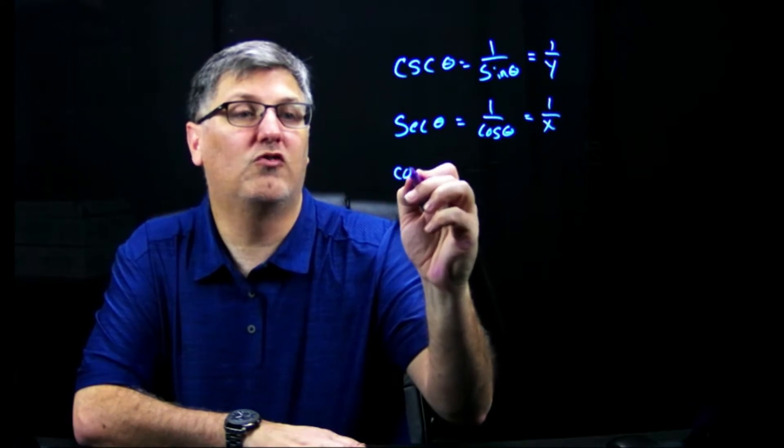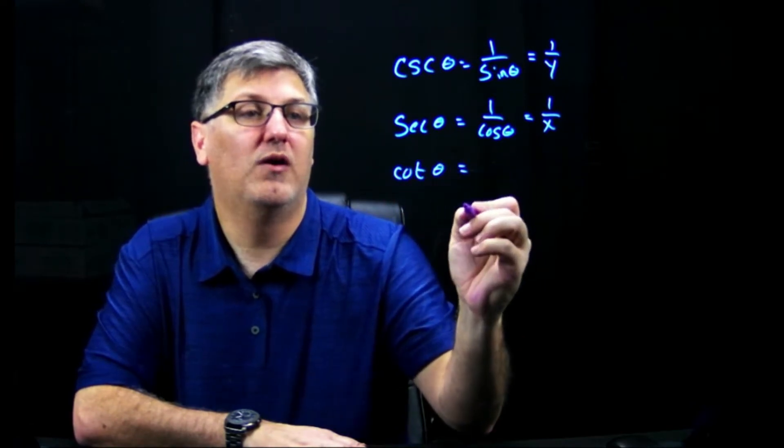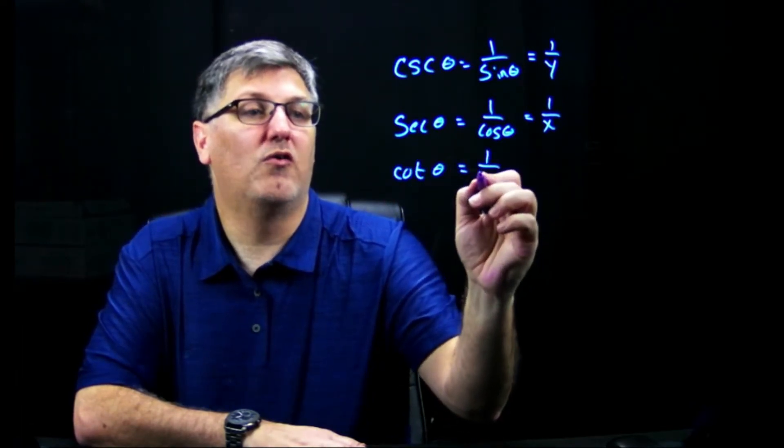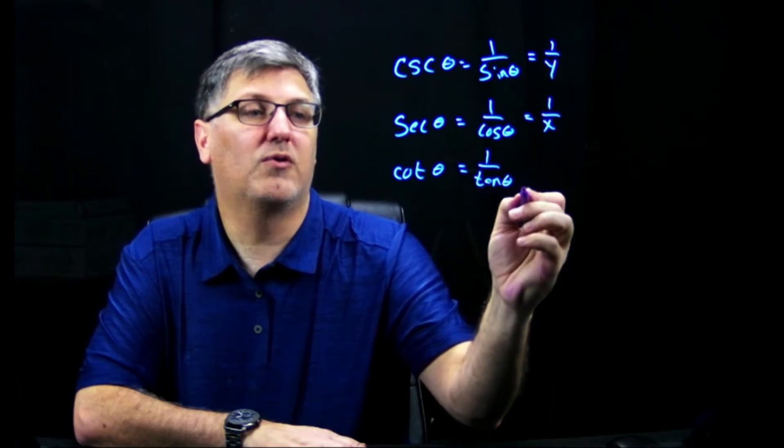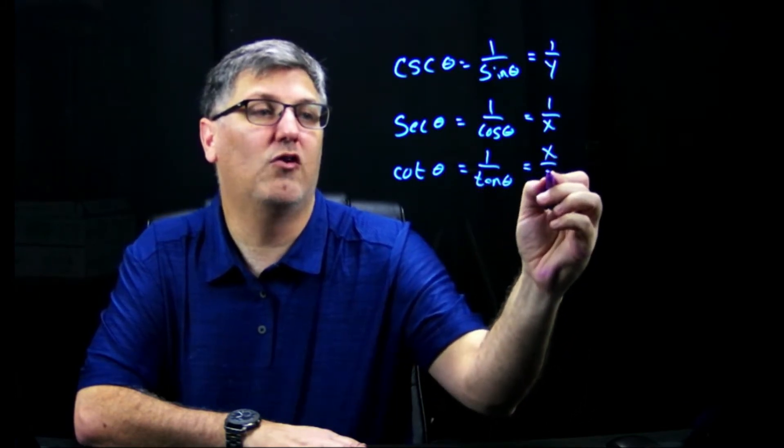And then, of course, cotangent of some angle, well, that would be 1 over tangent because it's the reciprocal of tangent. This gives me x over y.